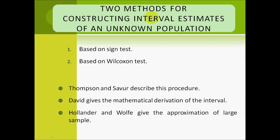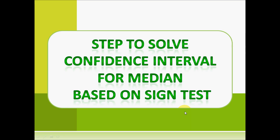There are two methods for constructing interval estimates of an unknown population. First, based on sign tests, and second, based on Wilcoxon tests. Thomson and Sever describe this procedure. David gives the mathematical derivations of the interval. Hollander and Wolff give the approximations for large samples. Now we go to the steps to solve the confidence interval for median based on sign tests.